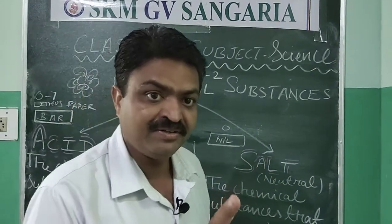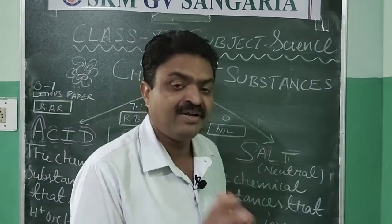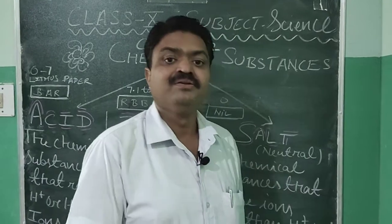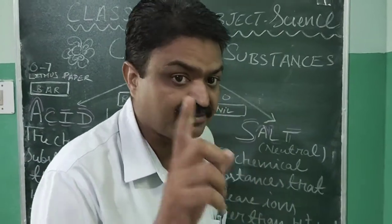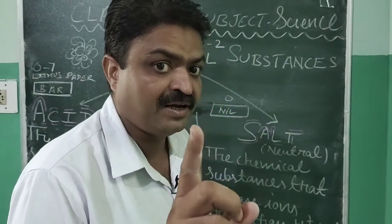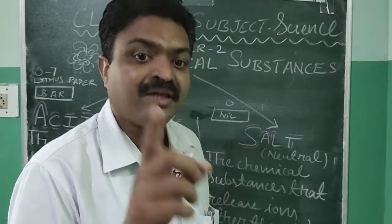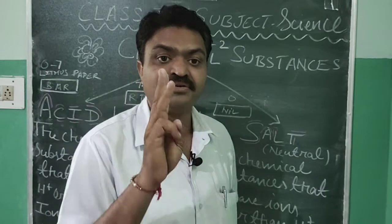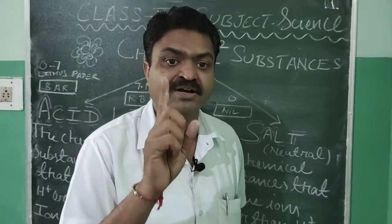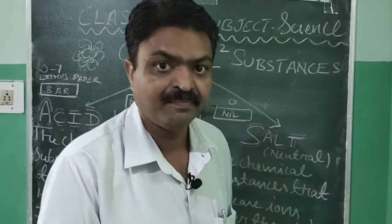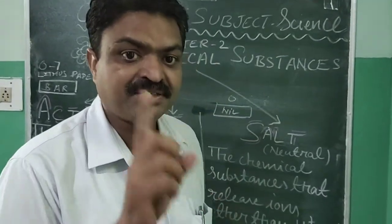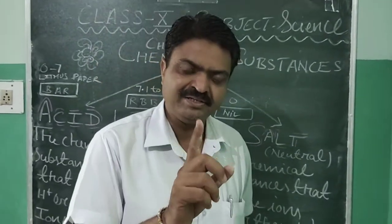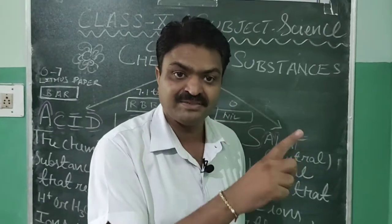What is it? It is acid, base, and salt. So students, we can categorize chemical substances into three different categories: first is acid, second is base, third is salt.